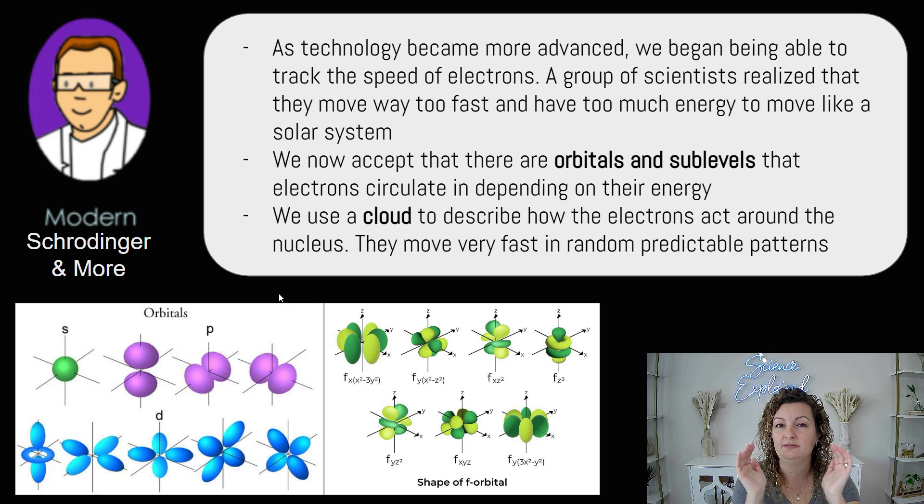So they're not in energy levels like Bohr. They're in an energy cloud or an electron cloud instead, with orbitals and sub levels. So you can see some of these orbitals here, and this is based off of how many electrons you have and the energy associated with that. So we have the S orbital, P orbitals, D orbitals, and then F orbitals. And they're all unique and different shaped, right?